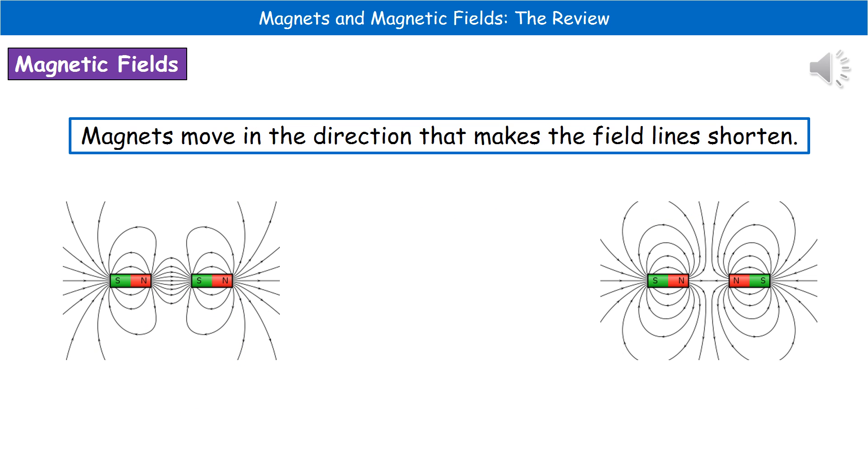So what we actually find is that magnets will move in a direction that makes the field lines shorter. So in our diagram on the left there, you can see we've got opposite poles facing each other, a north pole and a south pole. Now, we know that those magnets will attract. And the reason for that is that if you look at the field lines between the north and the south pole to make them shorter, they move closer together. So that's why they will attract.